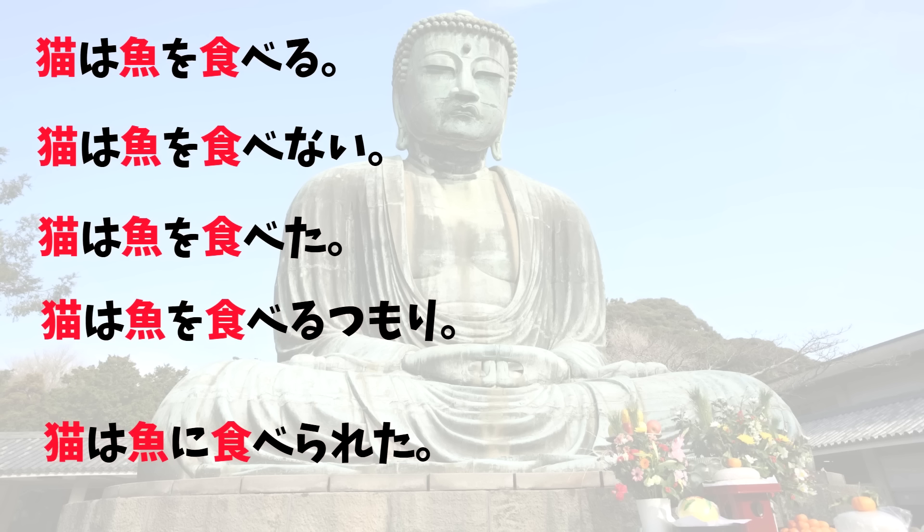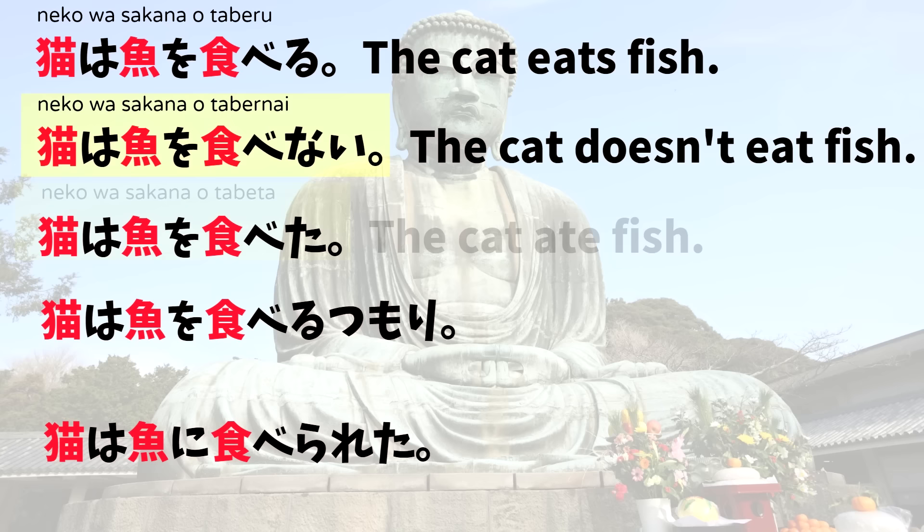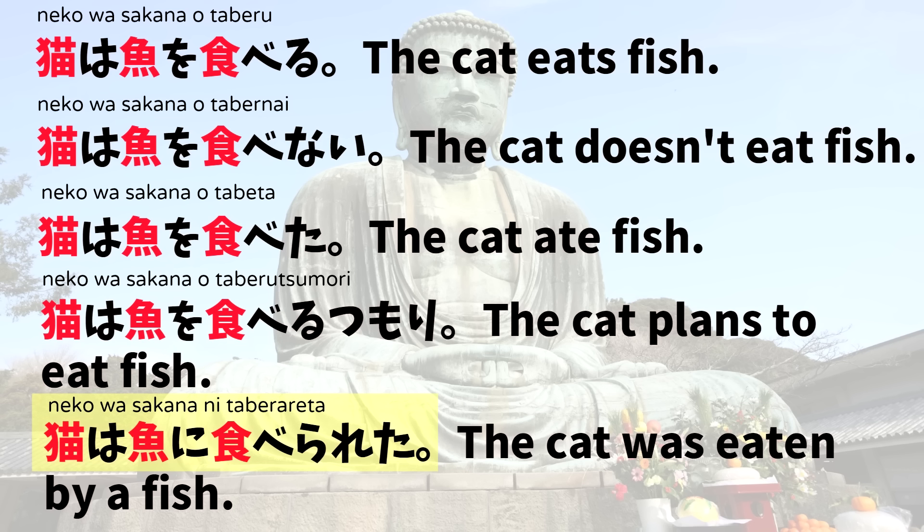Here are some Japanese example sentences that have the same Chinese characters, but the meaning is very different because of the inflection that's used. 猫は魚を食べる - that means the cat eats fish. 猫は魚を食べない - that means the cat doesn't eat fish. 猫は魚を食べた - that means the cat ate fish, in the past tense. 猫は魚を食べるつもり - the cat plans to eat fish. 猫は魚に食べられた - that means the cat was eaten by a fish. So a Chinese speaker reading these sentences would get the core meaning of the Chinese characters, but they would miss some meaning in the inflection. For example, the negative or the past tense or intention or the passive form - especially the last example could be highly misunderstood.